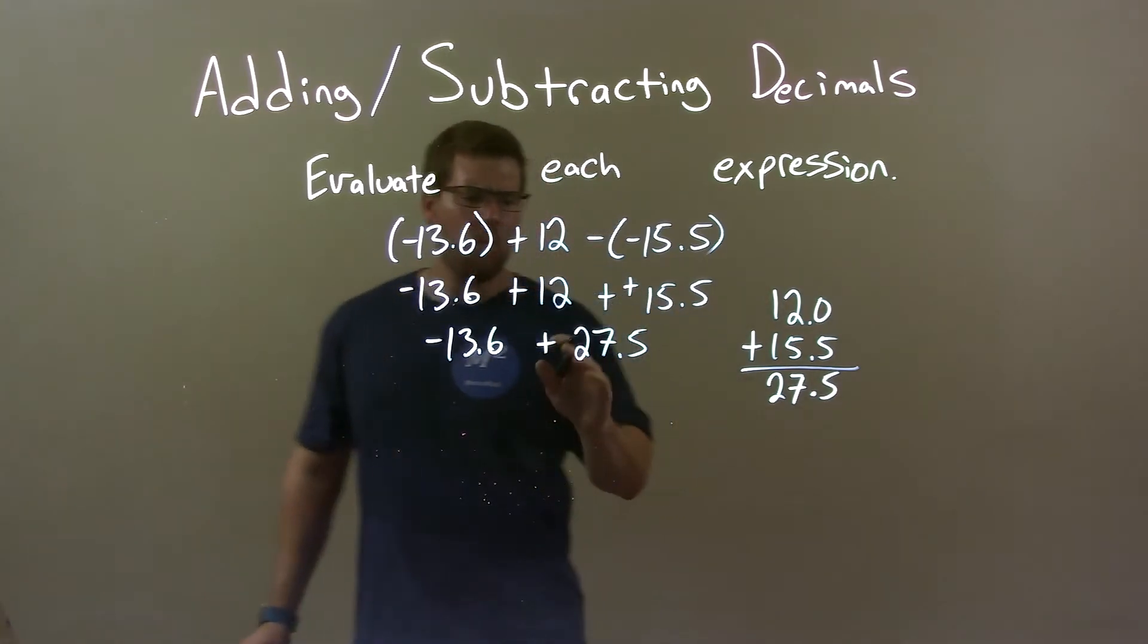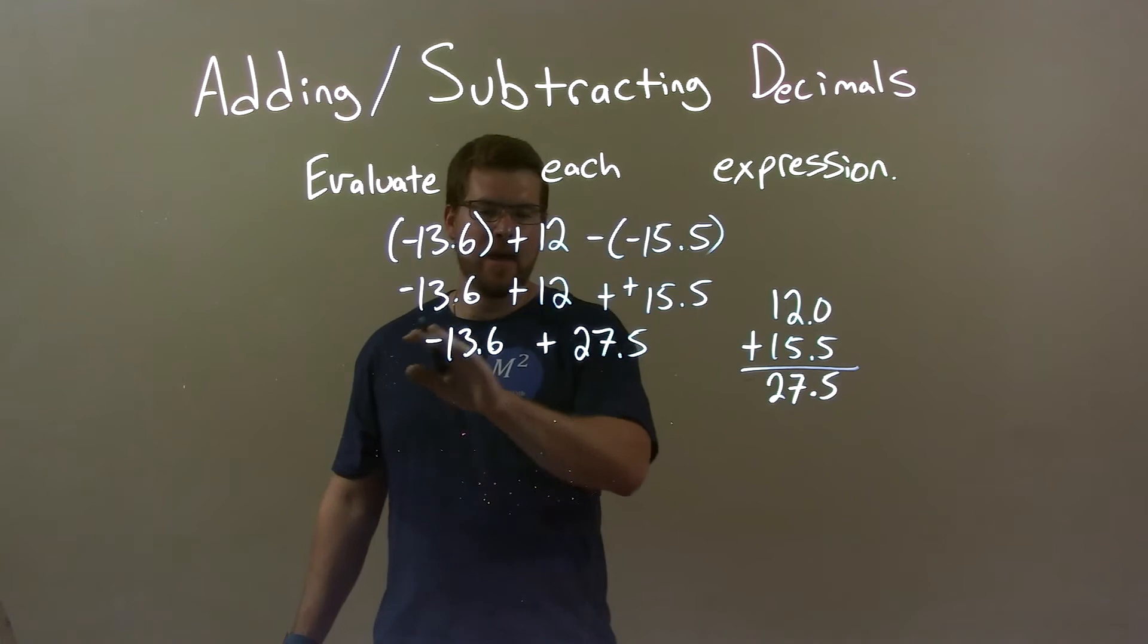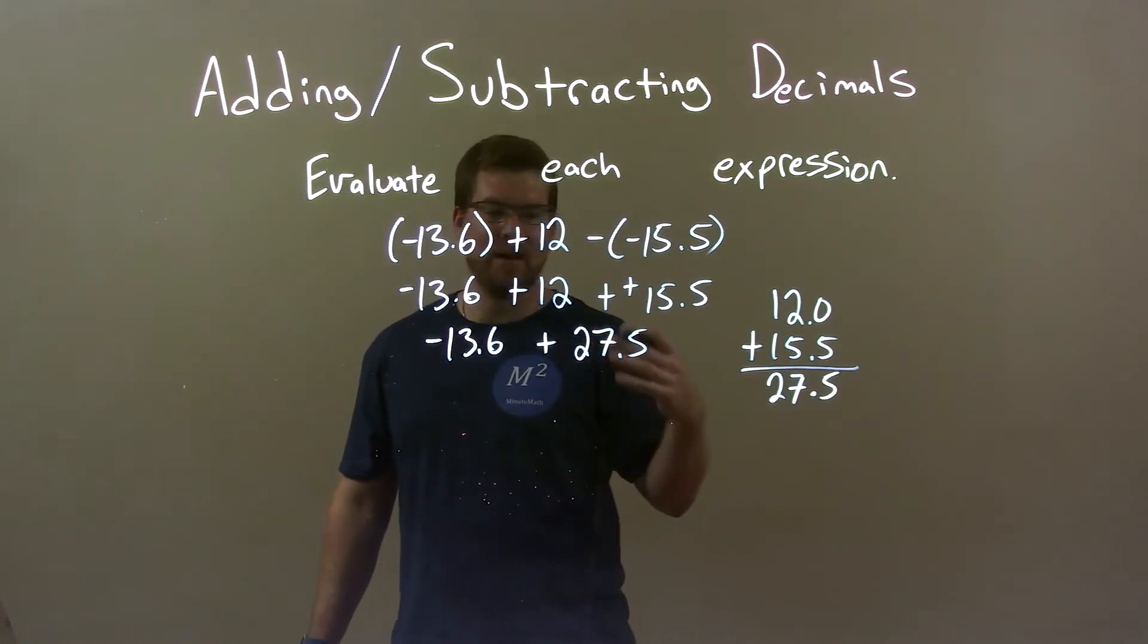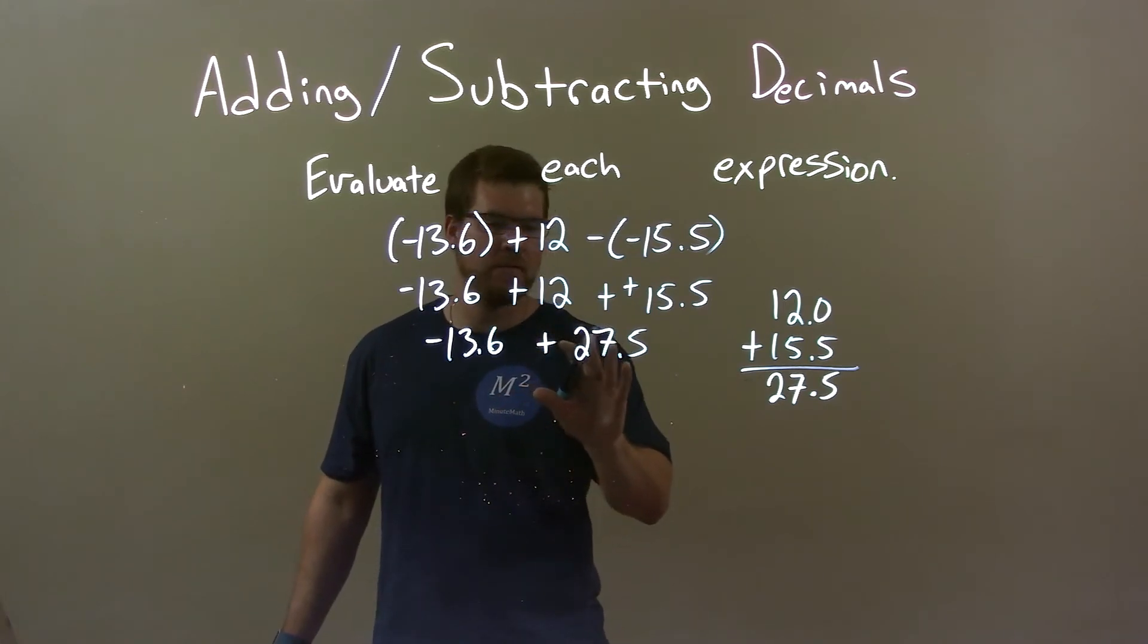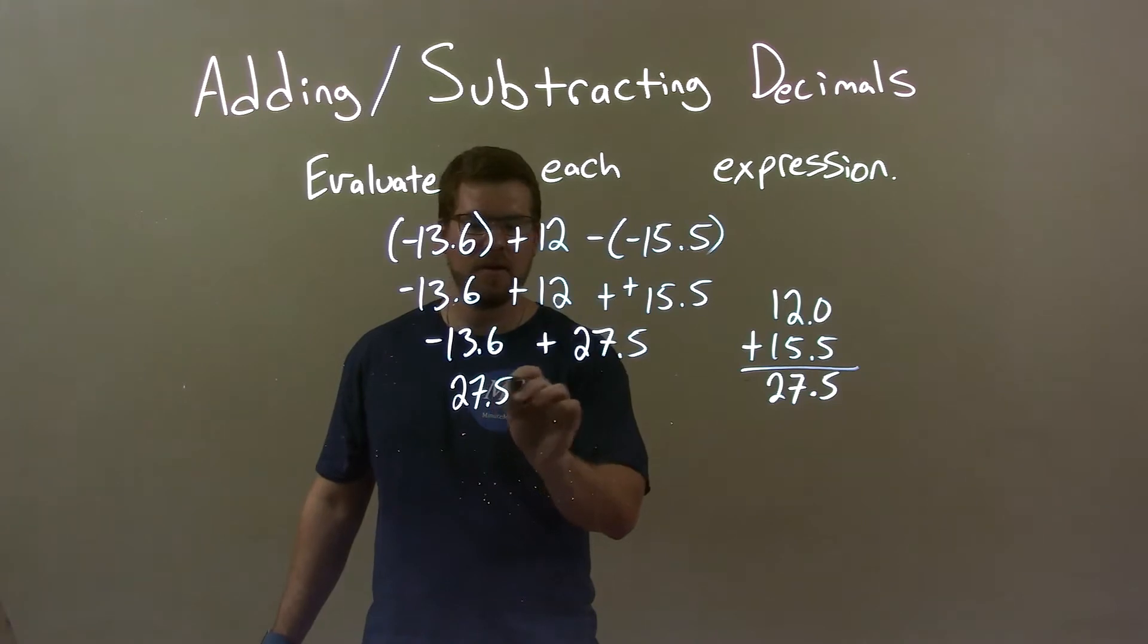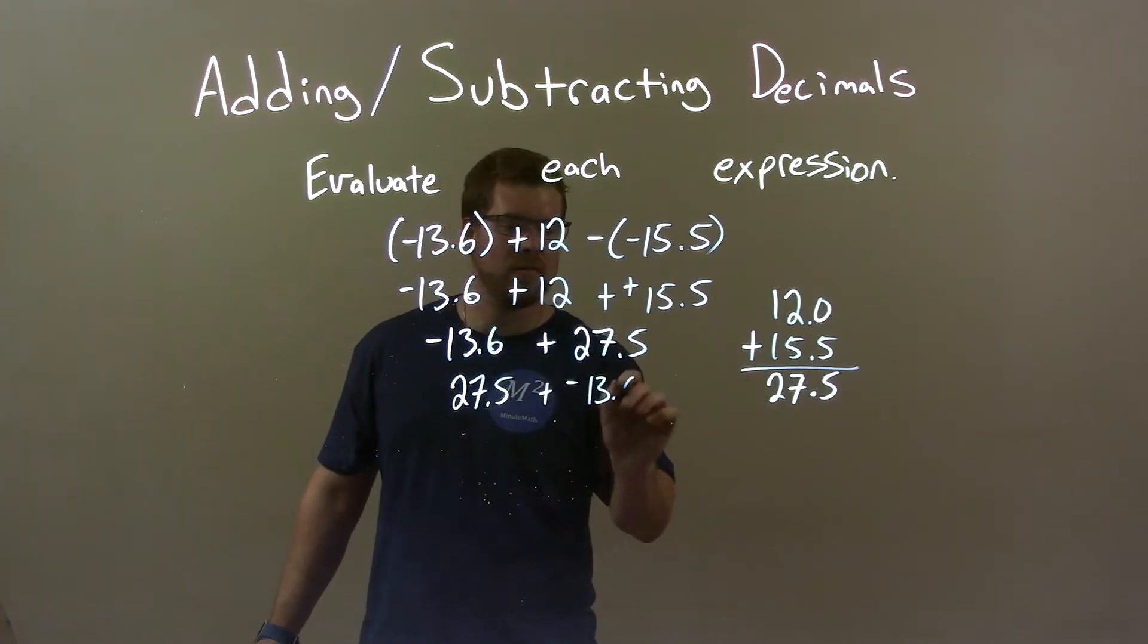We know that adding that negative here, 27.5 is the same thing as subtracting. But to get there, I'm just going to flip the plus sign because we can rearrange this. So we have 27.5 plus a negative 13.6.